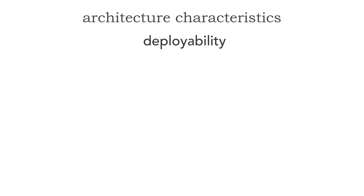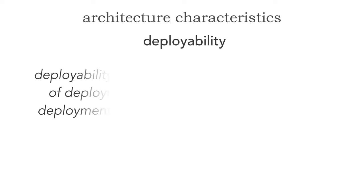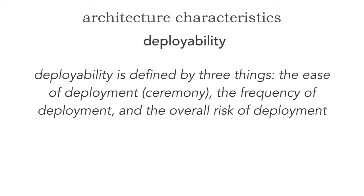When we talk about deployability as an architectural characteristic, it's really defined as three things. First of all, it's the ceremony — in other words, the ease of deployment. How easy is it to deploy your software into production? It's also about the frequency of deployment, and finally, about the overall risk of deployment.